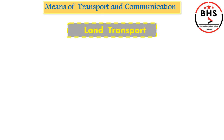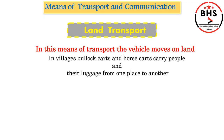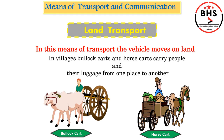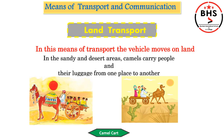Land transport. In land transport, we go from one place to another by using a vehicle that moves on land. In villages, bullock carts and horse carts carry people and their luggage from one place to another. In sandy and desert areas, camels carry people and their luggage. You can see a camel cart in these pictures — it carries people and their luggage from one place to another in sandy and desert areas.